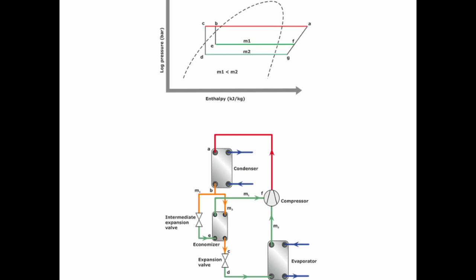Intermediate expansion valve sprays the refrigerant into the BPHE to cool down the liquid inside the BPHE coming from the condenser via liquid line. This process is also known as subcooling.